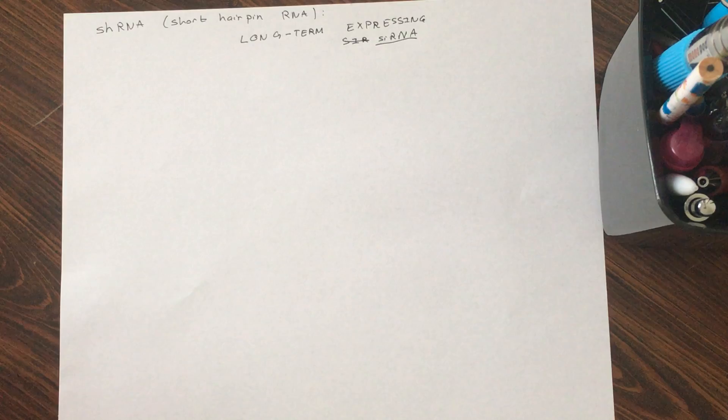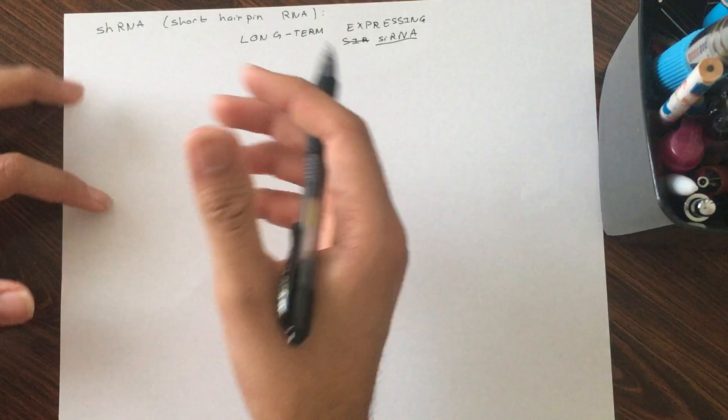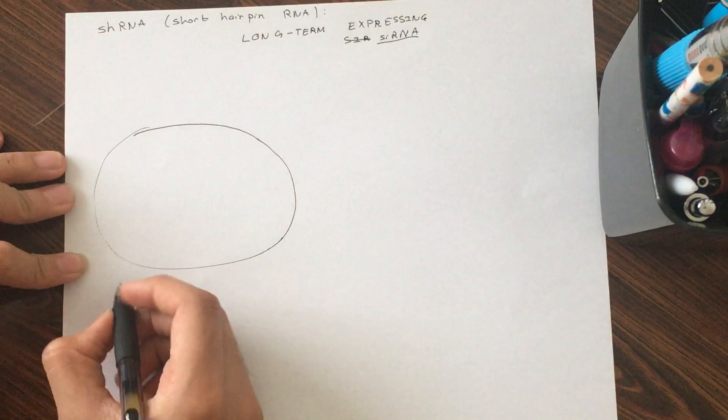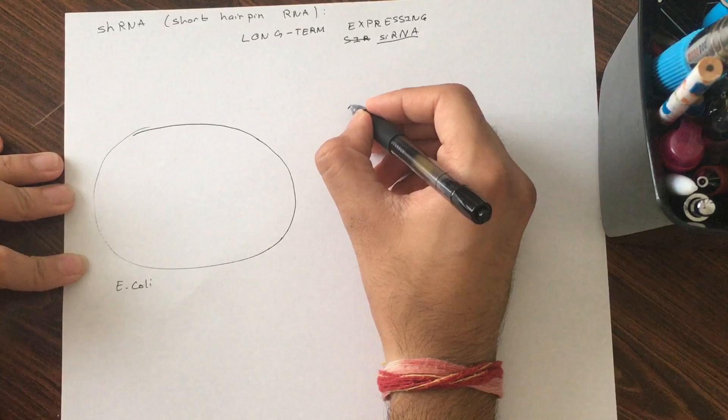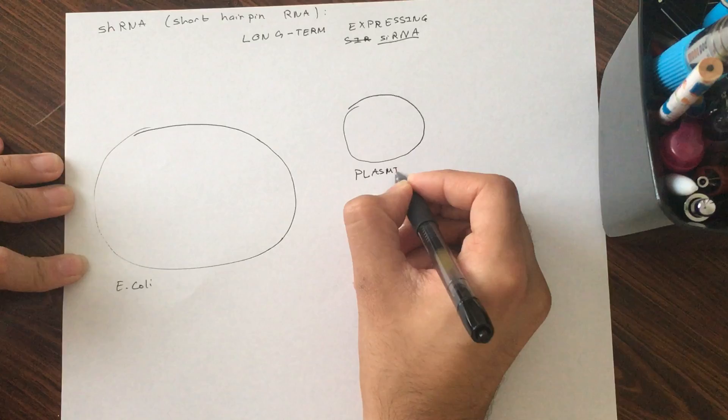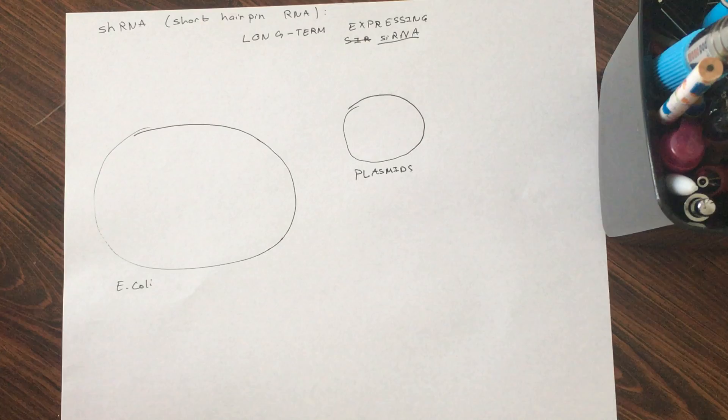So what this does is suppose you want to develop something that goes into a cell. Suppose this is a bacterial cell, E. coli bacterial cell. And as you know, E. coli use these certain plasmids.